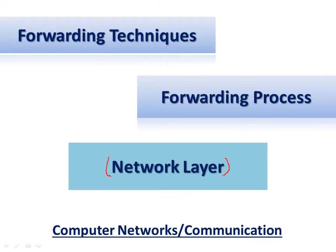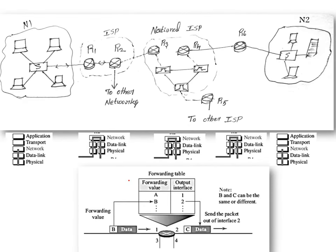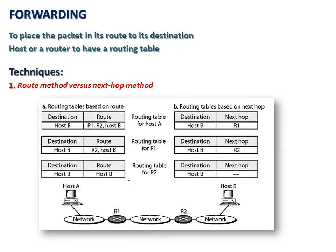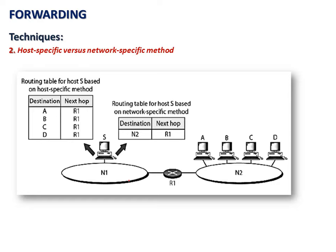When a packet is to be transmitted from a source to destination, the network layer collects data from the upper layer, packs all the data, and forwards it to the destination. We will see how internet communication happens over different networks and the techniques to be followed to simplify the complexity of a routing table.